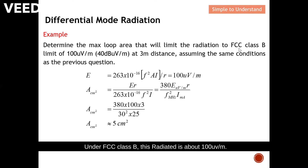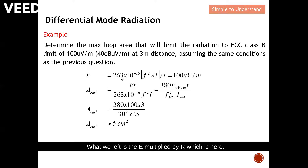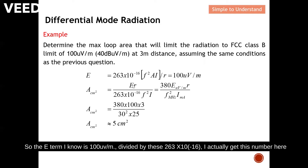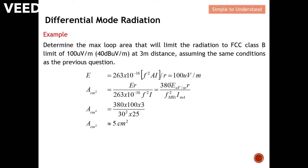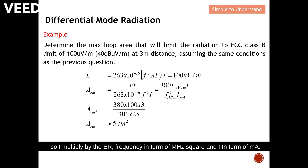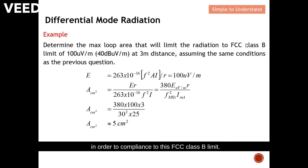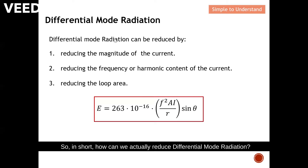For Example 2, we look at the radiated emission limit for differential mode radiation under FCC Class B, which is about 100 microvolts per meter. We rearrange the equation to solve for area: E multiplied by r divided by 263 times f squared times I. Substituting the known values — E is 100 microvolts per meter, frequency in MHz, and current in milliamperes — we compute that the loop area must be less than 5 centimeters squared in order to comply with the FCC Class B limit.